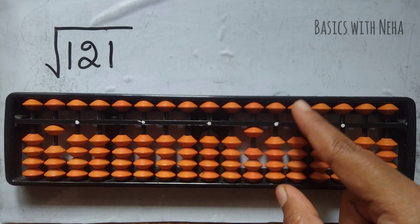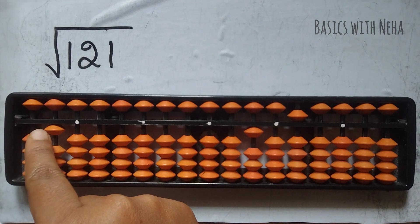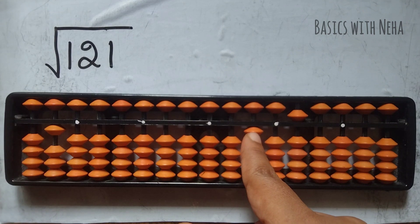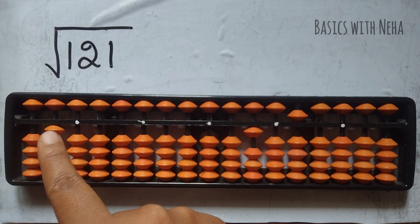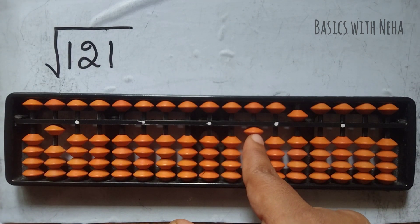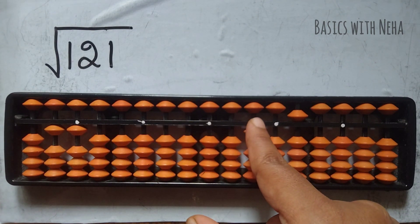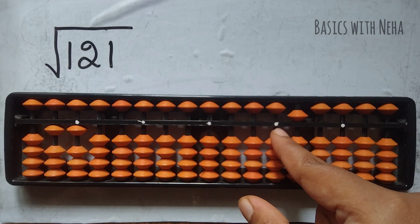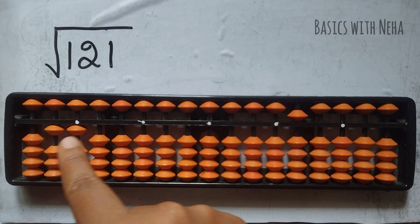Now I have to see: one into something will give me one or less than one. I cannot take one tens, as that is 10. So I'm going to take one times one, which is one. If this was the last rod I was using, my answer would have been on this rod — something like 10-point-something.